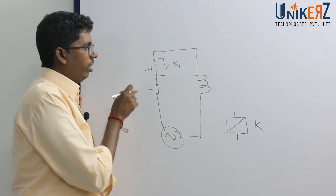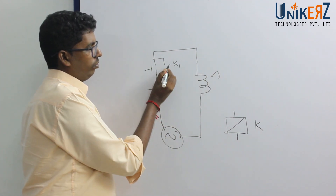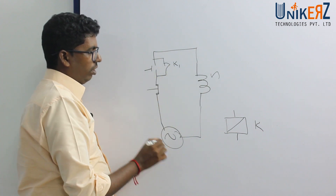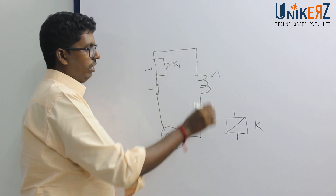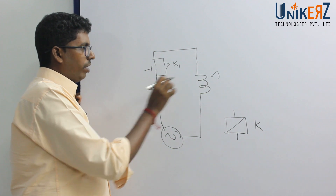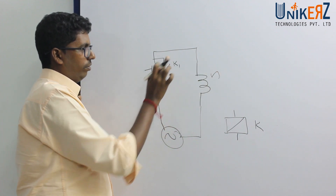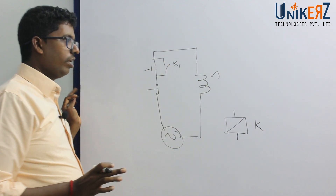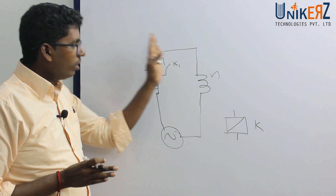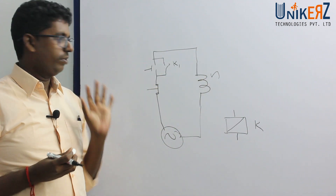Now start — energize, close, circuit establish. Stop — this one de-energize, circuit open. Now this control circuit: motor on, off. Simple.